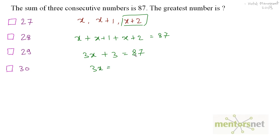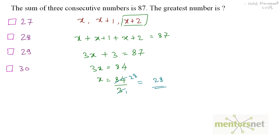Simplifying: 3x plus 3 equals 87. So 3x equals 87 minus 3, which equals 84. Therefore x equals 84 divided by 3, which equals 28. The greatest number is x plus 2, which equals 28 plus 2, and that equals 30. So the value of the greatest number is 30.